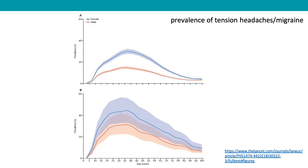When we think about the different categories of headache, they mostly fall into primary tension-type headache, which accounts for about 40 percent of presentations. Primary migraine accounts for about 10 percent. Trigeminal autonomic cephalalgias — things like trigeminal neuralgia — present in less than one percent, and secondary medication overuse headache, particularly involving codeine, will be discussed in more detail later.